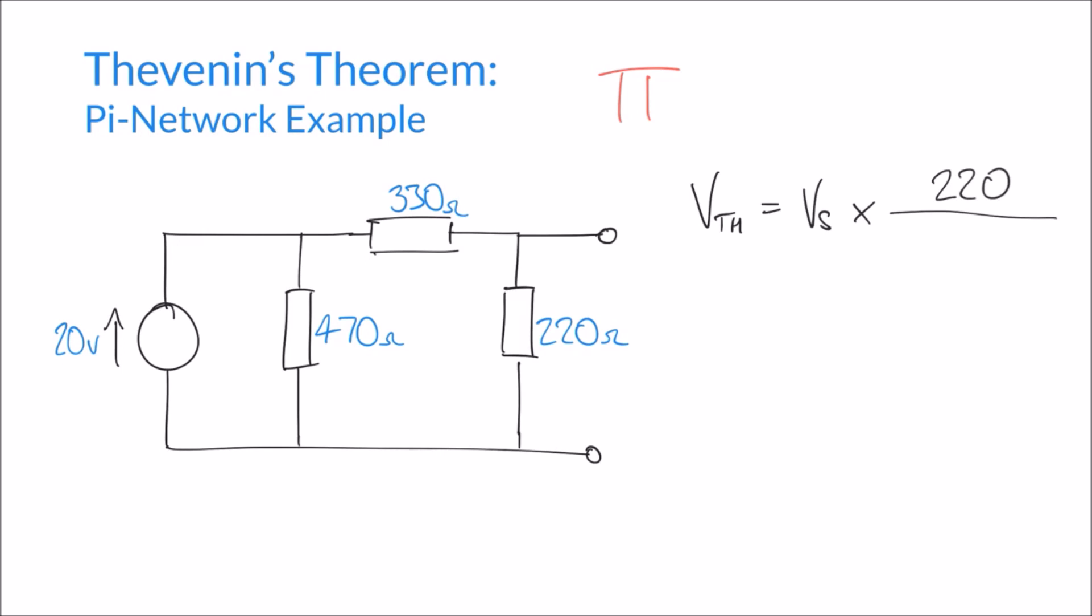On the bottom of the fraction, we put our impedances or resistances added together. But in this case, we're only interested in the current loop that we are concerned with, which is this one here with the 220 in. And so the resistances added together on the bottom of the fraction will be 220 plus 330.